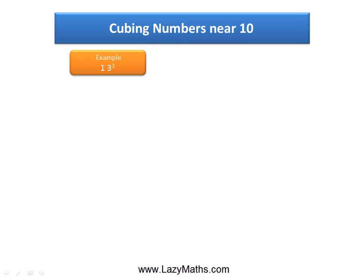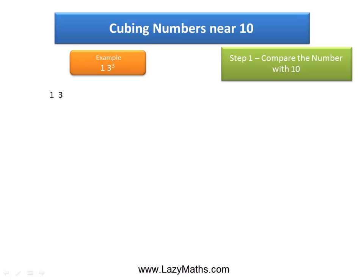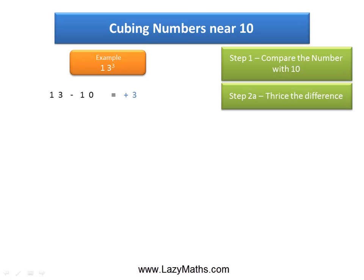Here's an example of cubing numbers near 10: 13 cubed. The first step is to compare the number to 10. 13 compared to 10 is 3 more than 10, or plus 3. So 13 minus 10 is plus 3. The next step is to twice the difference.